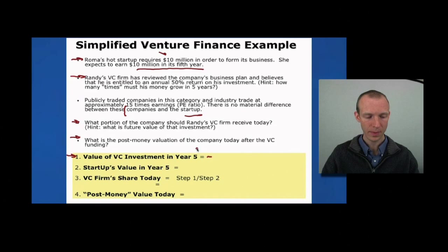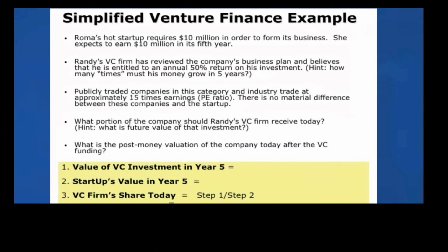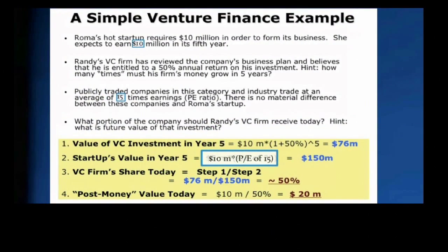See if you can calculate ahead of time: what the value of this VC investment is going to be in year five, what formula we need, what the startup's valuation is going to be in year five, what the VC firm's share is today, and then the post-money valuation. The value of the VC investment in year five has to be $76 million. This is because the investment at the beginning is $10 million, and this is the formula for calculating that there must be a 50% annual return on the investment over five years. The startup's value in year five is going to be the $10 million in earnings times the industry P/E ratio of 15.